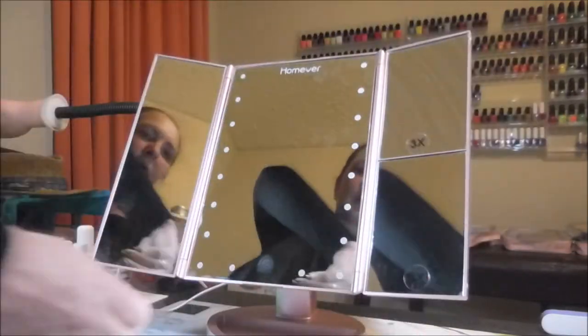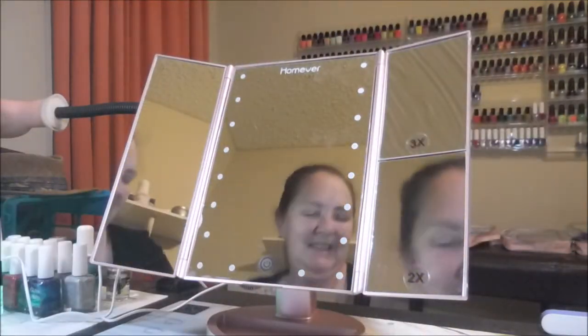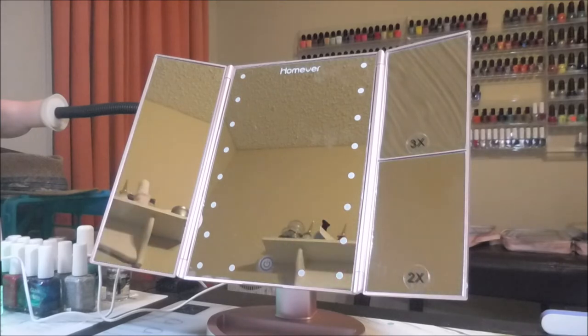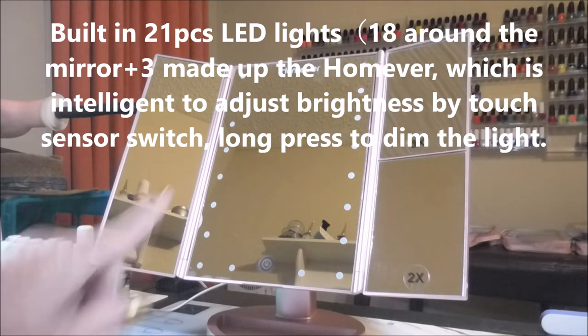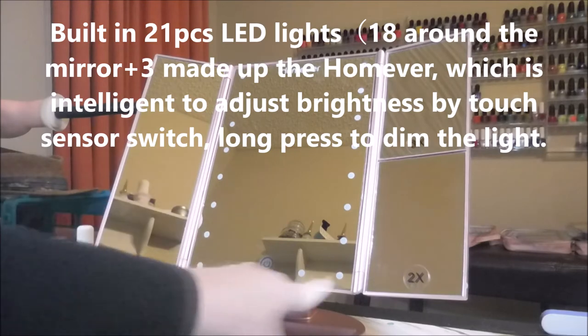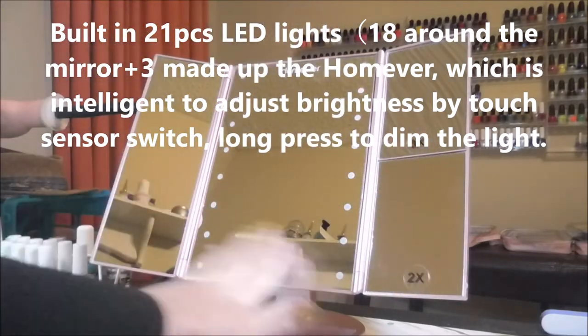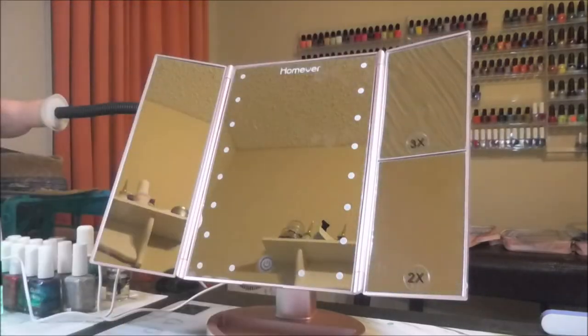So this is the HomeEver Beautiful Lamp and Mirror because it's got all these pretty little lights on it. It's got all these little bitty lights around the edge. Beautiful, beautiful setup. I do have some fingerprints on it, I apologize.